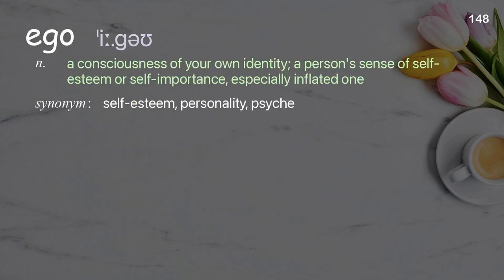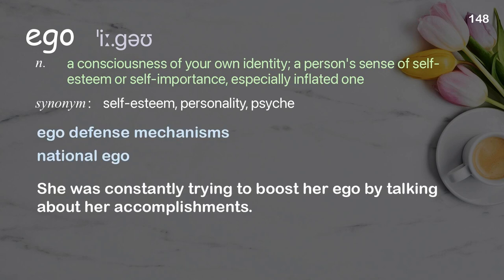Ego: A consciousness of your own identity; a person's sense of self-esteem or self-importance, especially an inflated one. Examples: Ego defense mechanisms, National ego. She was constantly trying to boost her ego by talking about her accomplishments.